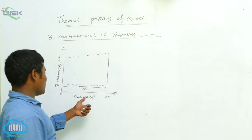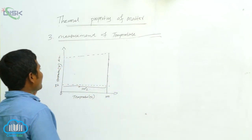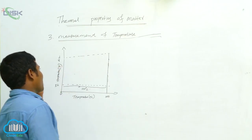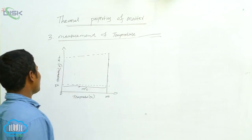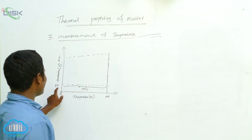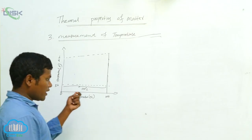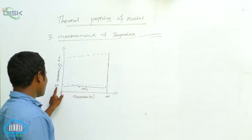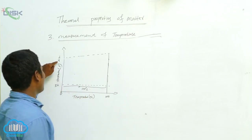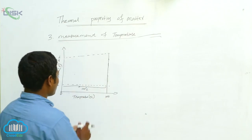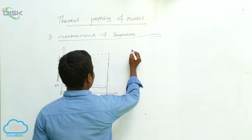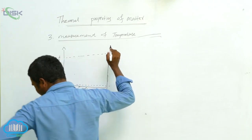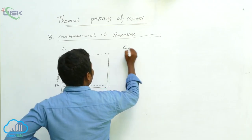In the exam you will get a four-mark question based on this — how you will explain about Fahrenheit and Celsius temperature, and derive the relation between Fahrenheit and degree Centigrade.